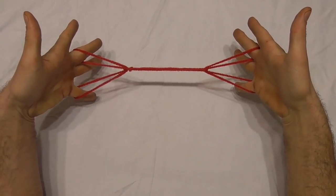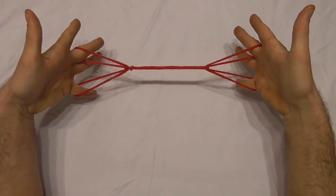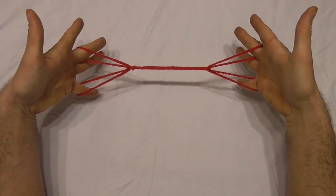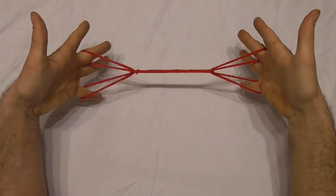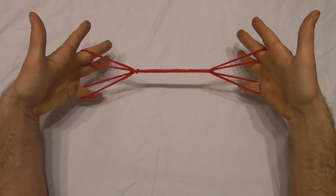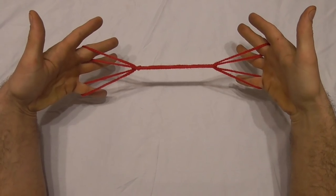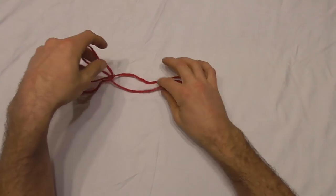This is the Dogs on a Leash string figure, also known as Crow's Feet. It's a pretty easy string figure so you should be able to follow along, and it's best done in a pretty small loop of string. Let's have a go at doing it.